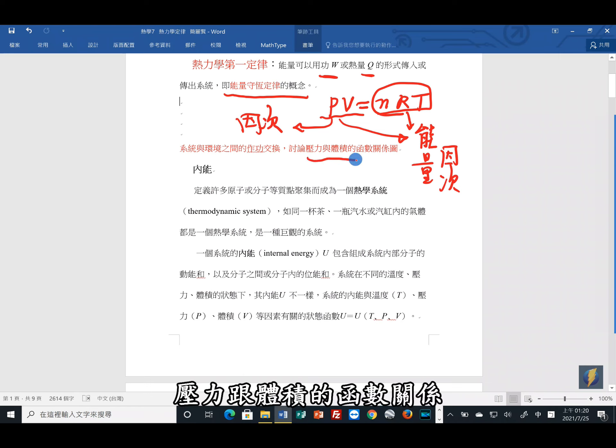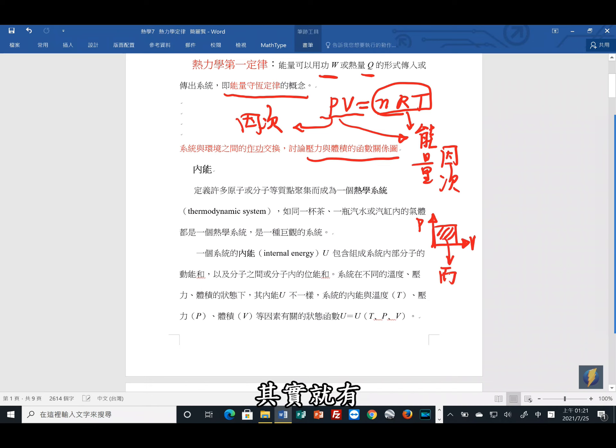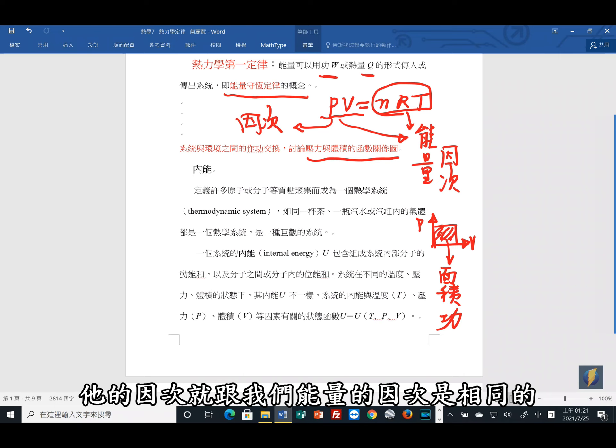压力跟体积的函数关系,如果是压力跟体积的函数关系,那么你可以知道的是P跟V,如果你是围起来的面积,这个面积其实就有功的概念。因此,我们要先提到的压力跟体积的函数关系,如果问你围起来的面积有何意义,这个意义一定跟做功会有关系,它的因次就跟我们能量的因次是相同的。